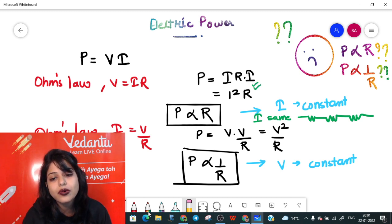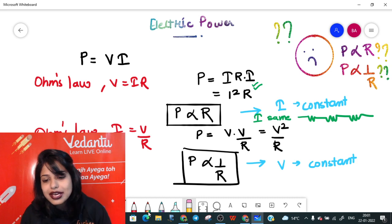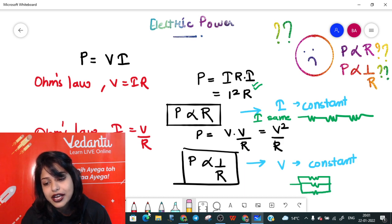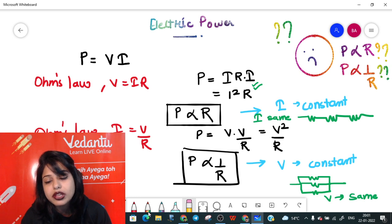On the other hand, if I have my resistances connected adjacent to each other, that is in parallel circuit, my V remains constant or same around all the elements. I'll use this formula in that case.